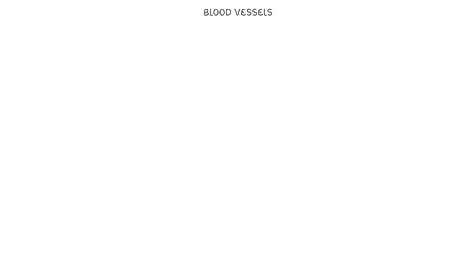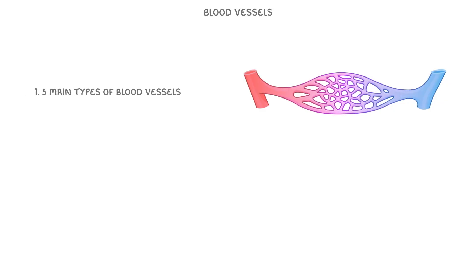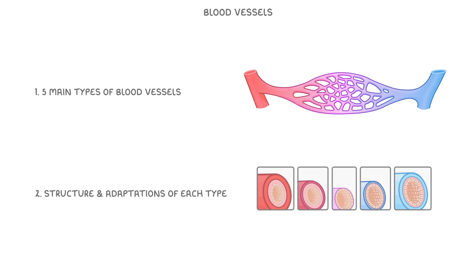In this video we're learning about blood vessels. We'll cover the five main types of blood vessel found in mammals, and then we'll look at the structure and adaptations of each type as well.